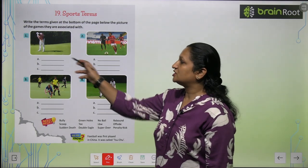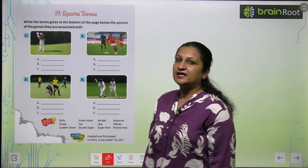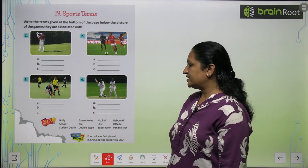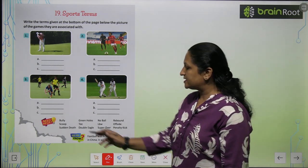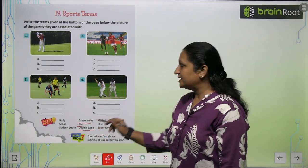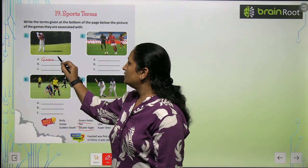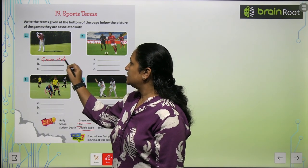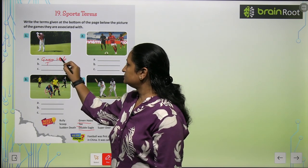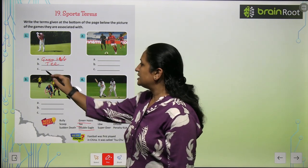So here we have to match these terms with these pictures. What is this person playing here? He is playing golf. So golf is related to our words which are: green, hole, T, and double eagle. You will write green, hole, T, and last, double eagle.